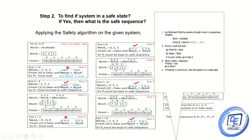Next we find whether the system is in a safe state and, if yes, determine the safe sequence by applying the Safety Algorithm. Step one says Work should equal Available, and Finish[i] should be set to false for all i from 0 to n minus 1. Here m equals 3 (resources) and n equals 5 (processes). So Work equals 3, 3, 2 and all Finish values are set to false.